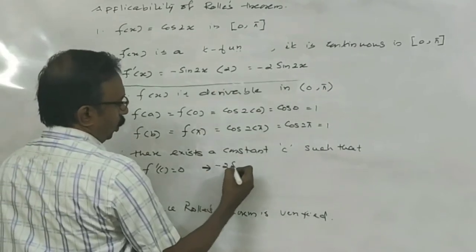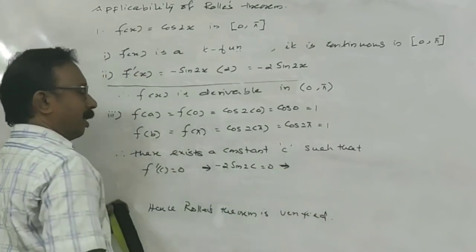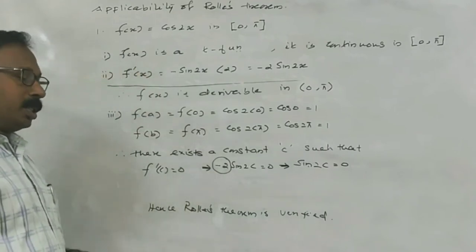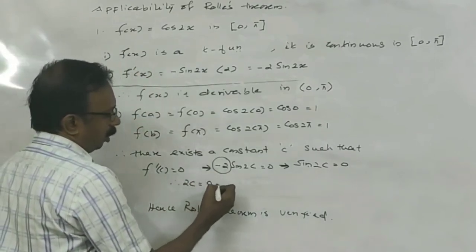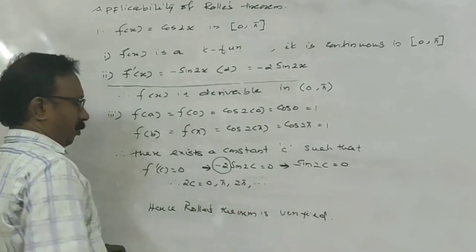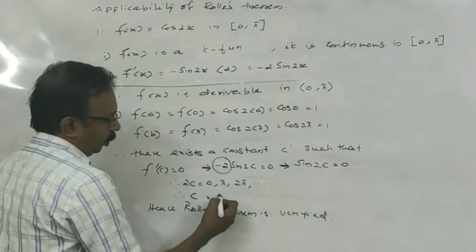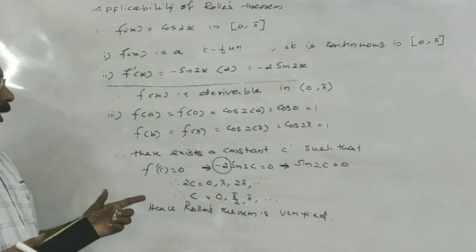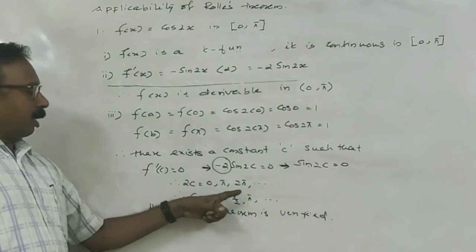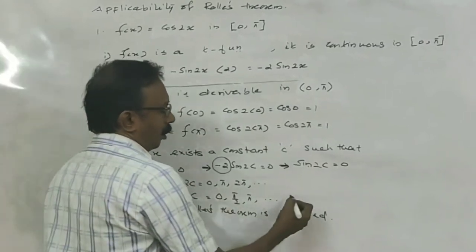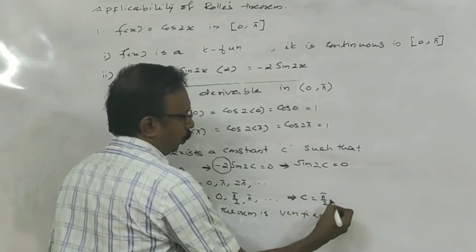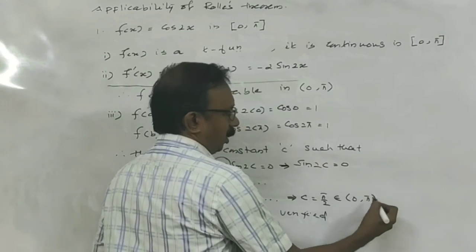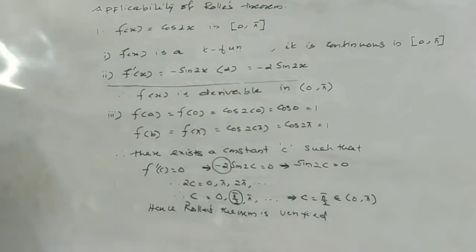Here F dash C equals minus 2 sine 2C equals zero. Since minus 2 is a constant, sine 2C equals zero, which implies 2C equals 0, pi, 2pi, etc. Therefore C equals 0, pi over 2, pi, etc. The value of C in between 0 and pi is C equals pi over 2, which lies in the open interval 0 to pi. Hence we can verify Rolle's theorem.